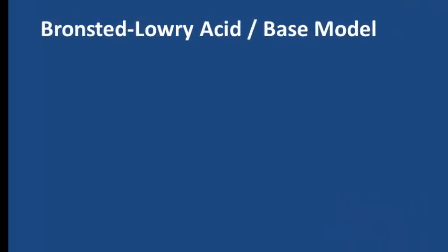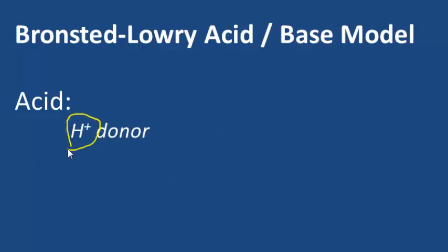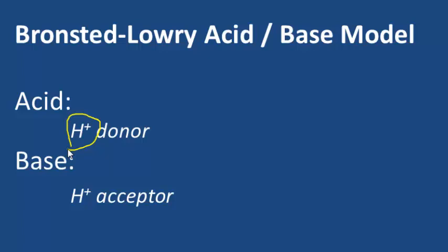First of all, what is a Bronsted-Lowry acid and a base? We want to define an acid — it's different from an Arrhenius acid. An acid from the Bronsted-Lowry model is a proton donor. Remember, a proton is a hydrogen with a positive charge. A base is whatever accepts a proton, so a base is a proton acceptor.